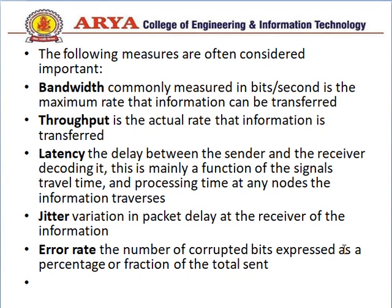The following measures are often considered important: first is bandwidth, throughput, latency, error rate. We will discuss them one by one. Bandwidth, commonly measured in bits per second, is the maximum rate that data can be transferred. Throughput is the actual rate that data is transferred. Latency is the delay between the sender and the receiver, mainly a function of signal travel time and processing time at any nodes the information traverses. Next is the variation in packet delay at the receiver. The last is error rate — the number of corrupted bits expressed as a percentage or fraction of the total. These are the five basic concepts for measuring the performance of the network.